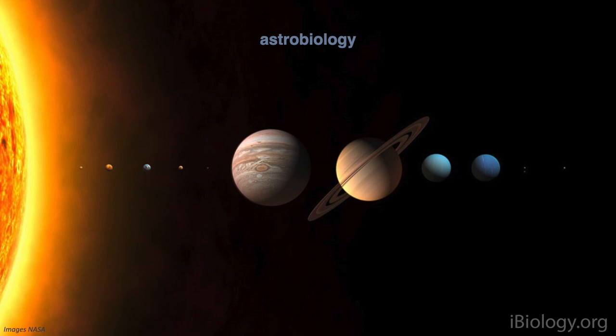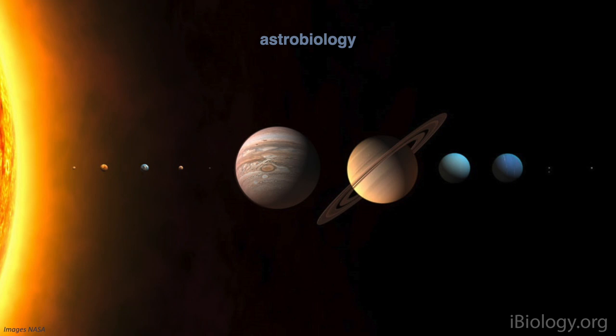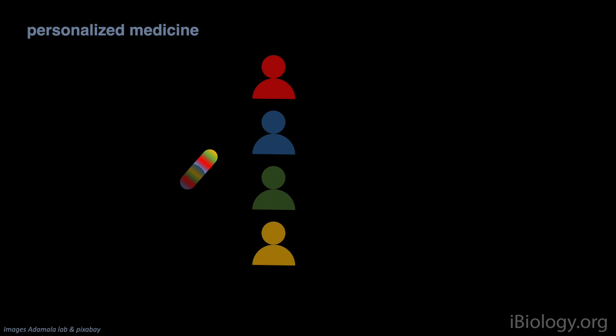We can also use synthetic cells to explore how else life can look, and figure out conditions that are needed for life to evolve — which would help us find life on other planets. The ability to make custom synthetic cells producing a specific small molecule or protein can also be used for making drugs.